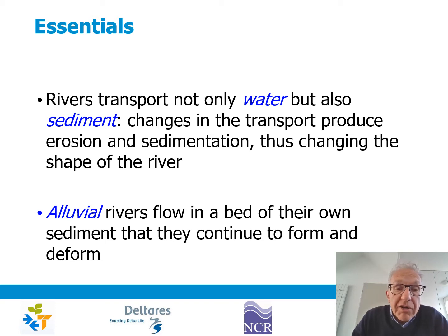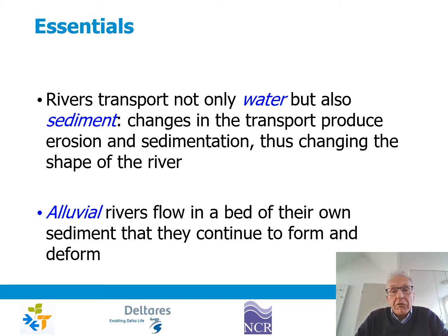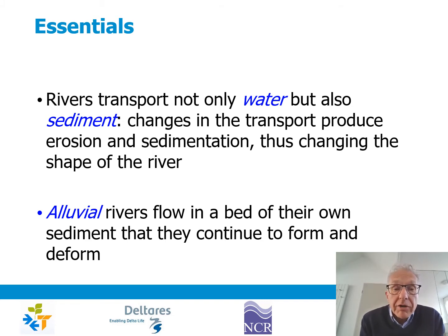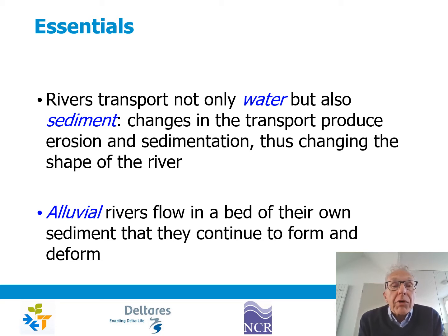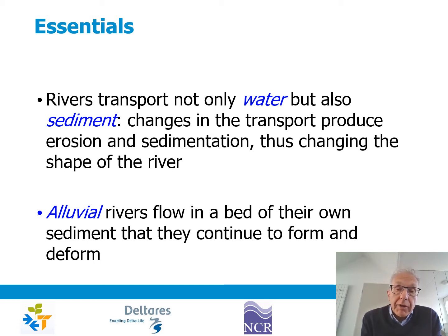There is a specific concept in engineering: alluvial rivers. Alluvial rivers flow in a bed of their own sediment that they continue to form and deform. In engineering, this refers to the actively changing part of the river. Floodplains, in this sense, are not considered alluvial — although a geologist wouldn't agree, because floodplains also consist of material deposited by a river — but they are more stable and don't play a role in the morphological processes that concern engineers.